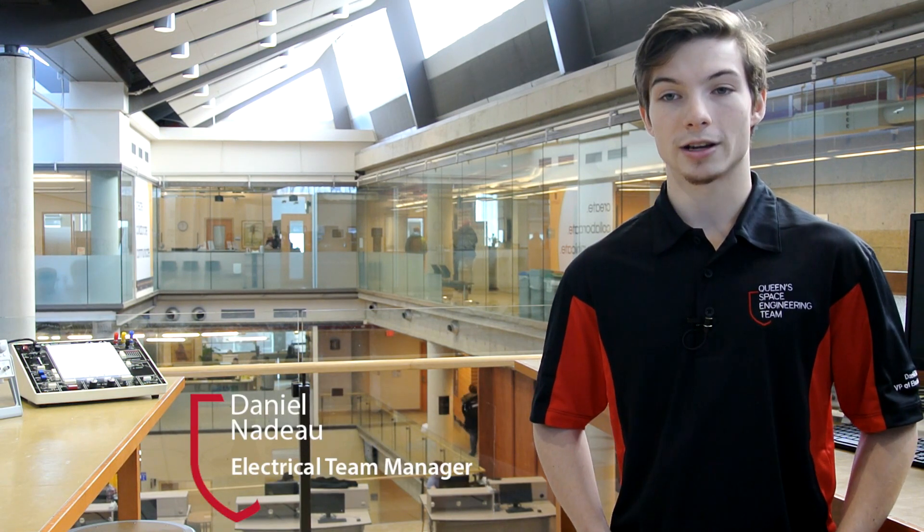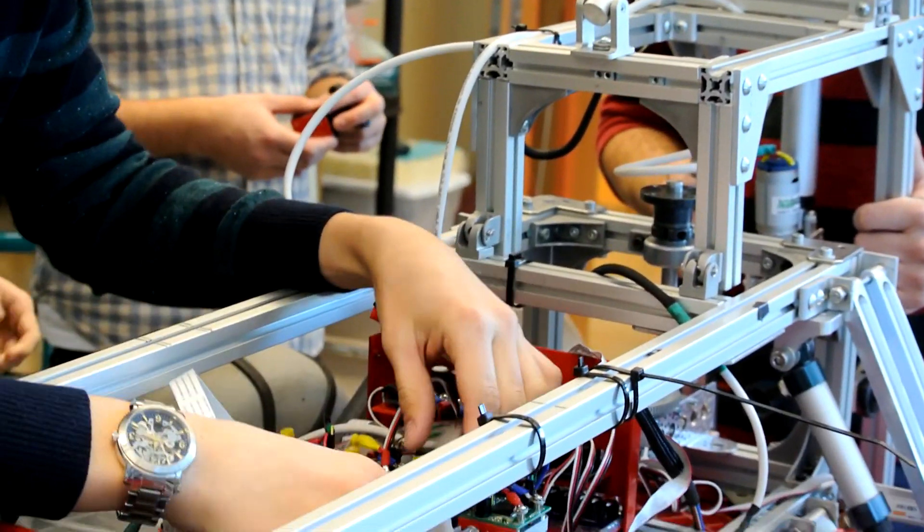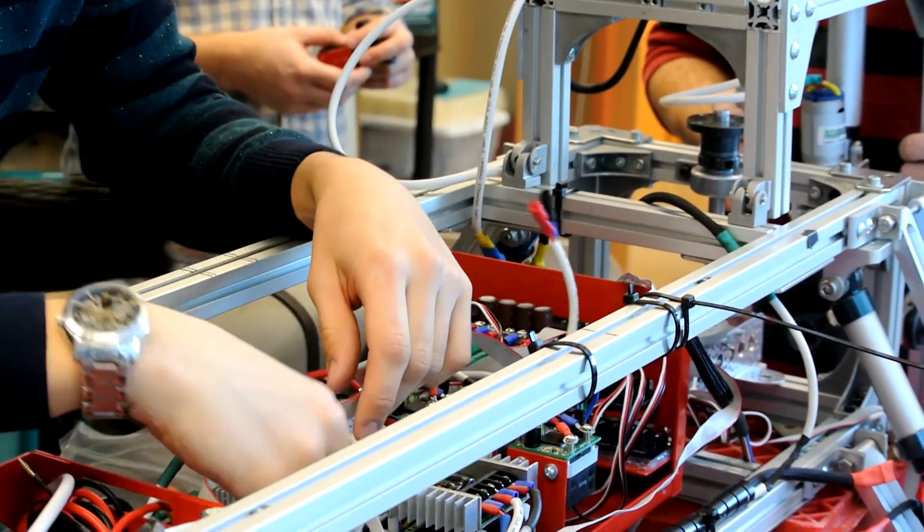At the heart of our rover is a Raspberry Pi 2 which manages the network connection as well as the control of all external sensor, servo, and motor ports. Control of these systems is performed by the Pi through a slave Arduino Mega.